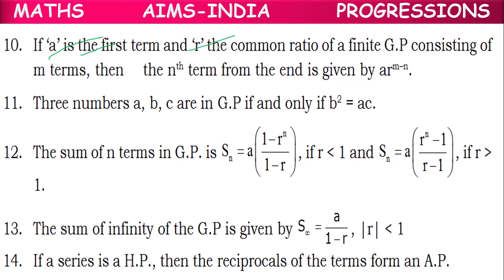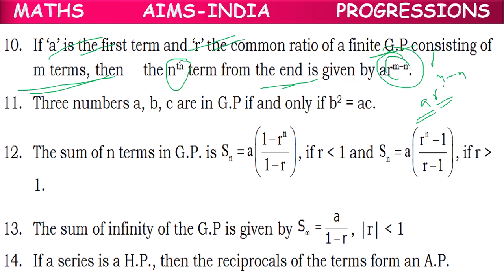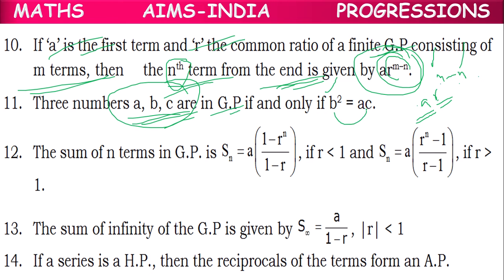If 'a' is the first term and 'r' is the common ratio of a finite GP consisting of m terms, then the nth term from the end is given by the formula: a·r^(m−n), where m is the total number of terms and n is the position from the end. Three numbers a, b, c will be in GP if and only if b² = ac — the square of the middle number equals the product of the other two.